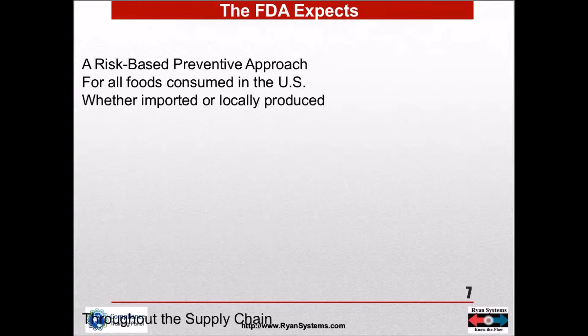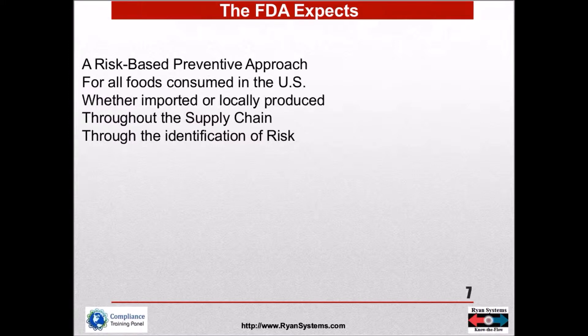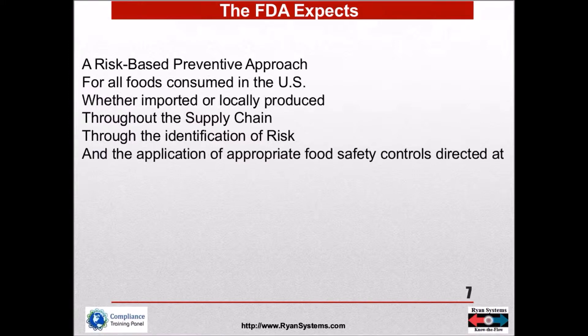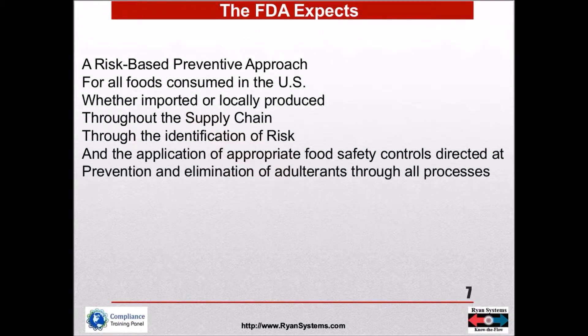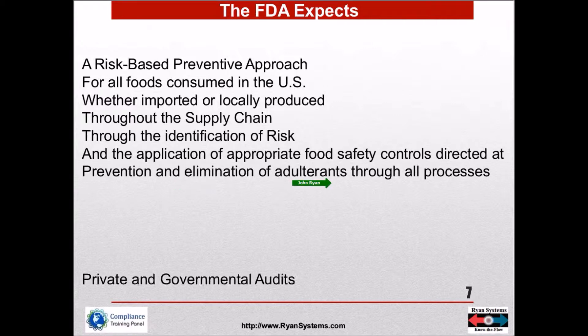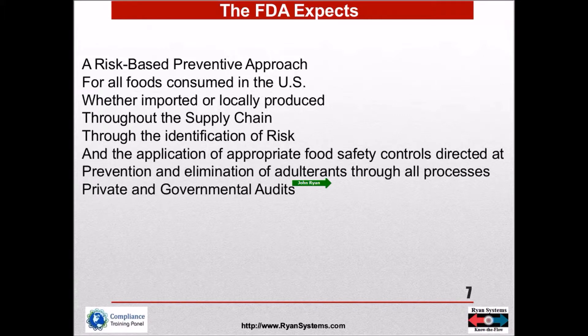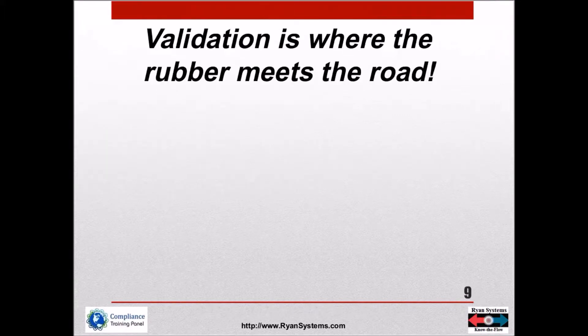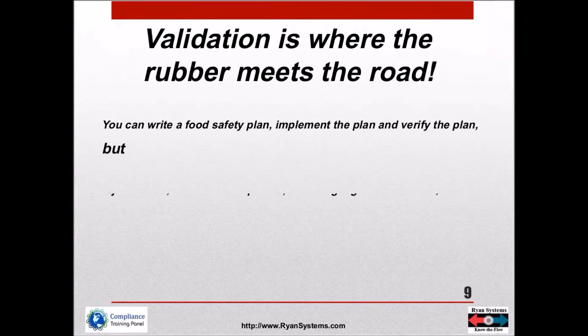FDA covers all foods consumed in the US, imported or local, applying appropriate food safety controls to the supply chain by finding out what the risk things are. They also throw in prevention and elimination of adulterants, which makes it a little more confusing, and then private and government validation requirements come in.